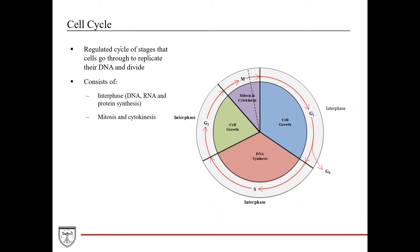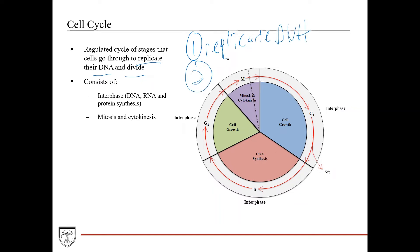The cell cycle is defined as a regulated cycle of stages that cells go through to replicate their DNA and divide. Those are the two key functions: replicating DNA and cell division. This is done in a regulated fashion because if cells uncontrollably divide, that's what cancer is.